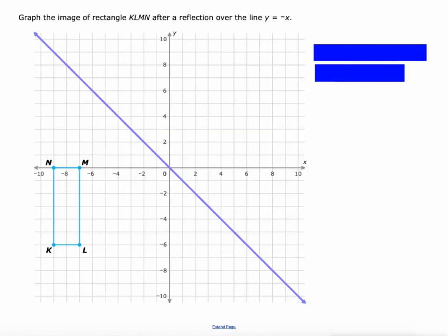Now we're reflecting over the line y equals negative x. Let's start with L. That's seven and a half diagonal units. So we're going to go seven and a half diagonal units the other way. That's probably the easiest way for you to do it when you're doing it on IXL. For point L: one, two, three, four, five, six and a half units. There's L prime.